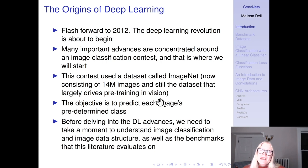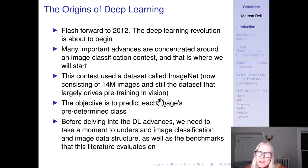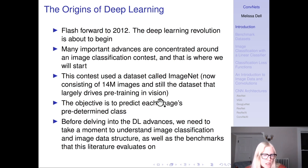By this time, there was a labeled dataset actually large enough to train a model. The objective in the ImageNet competition was to predict each image's predetermined class. The other two points mentioned before — initializing the weights in a stupid way and using the wrong kind of nonlinearity — we'll come to those points in time as well. Before we delve into the early deep learning advances through CNNs, we need to understand image classification, the data structure of an image, and the benchmarks this literature evaluates on.